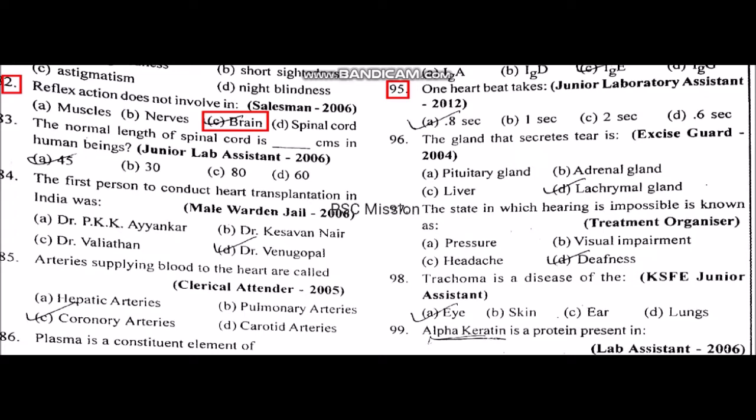The normal length of the spinal cord is 45 cm. The first person to conduct heart transplantation in India is Dr. Venugopal.